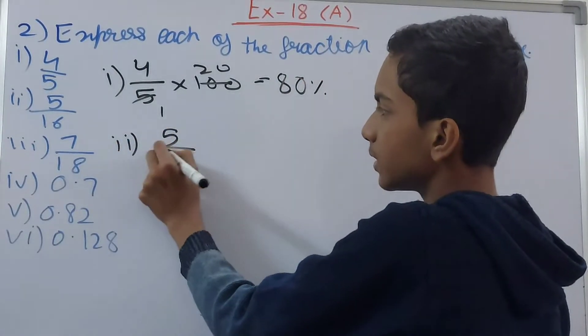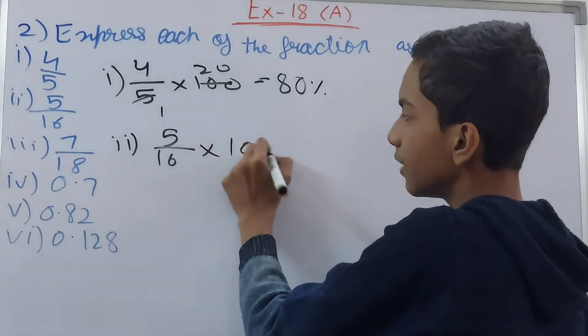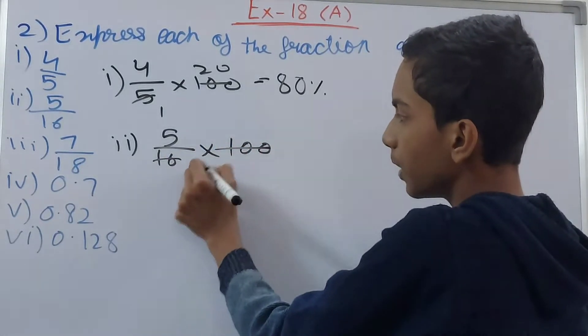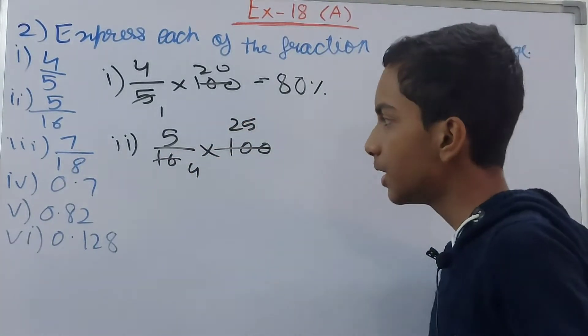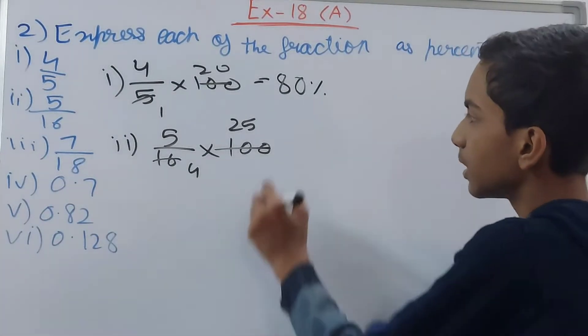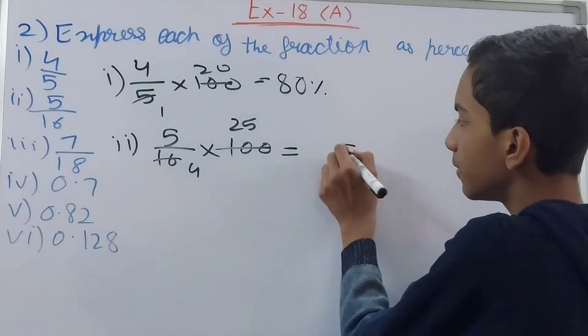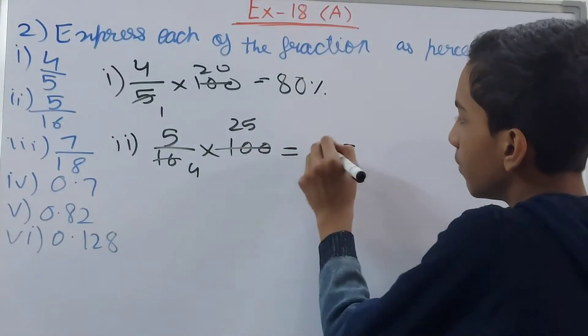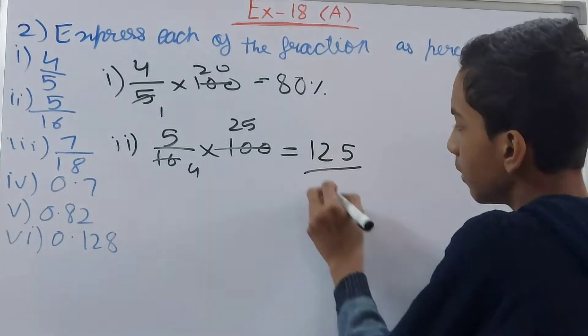Then the second one is 5 upon 16, again multiply by 100. So cancel 4 and 25 by 4. Can this be cancelled further? No. So this becomes 5, 25 and 2, so 125 upon 4.